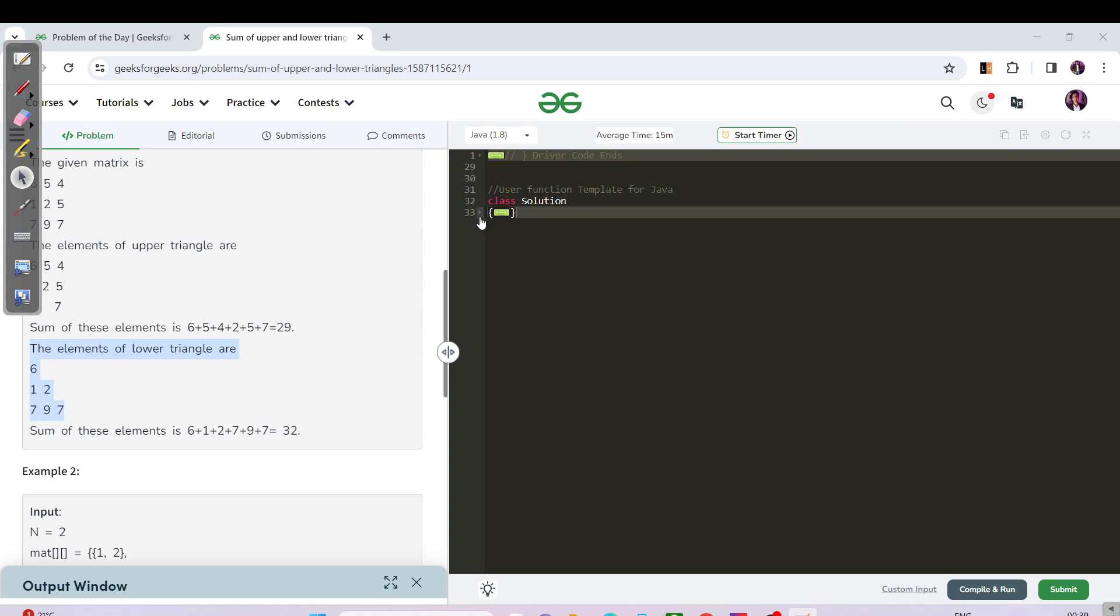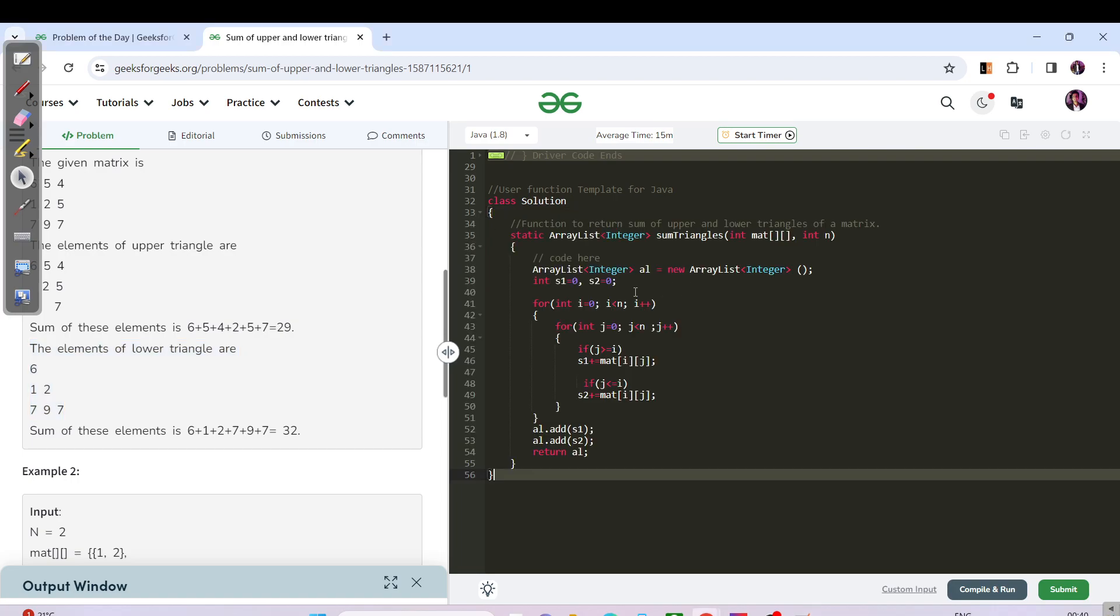Okay, let us see the Java code now. You should pause this video here, try to code the pseudo code in your code editor, then hit the submit button and verify it, then come back to this video. Now I'm hoping you have done that. We have our list because the return type is list. We have s1 and s2, and we have a nested for loop. For j greater than equals to i we have the upper sum, and for j less than equals to i we have the lower sum.